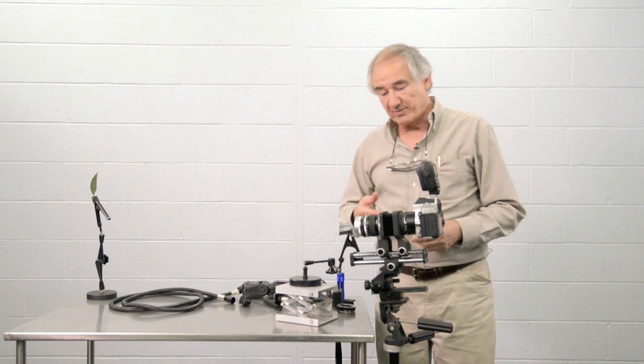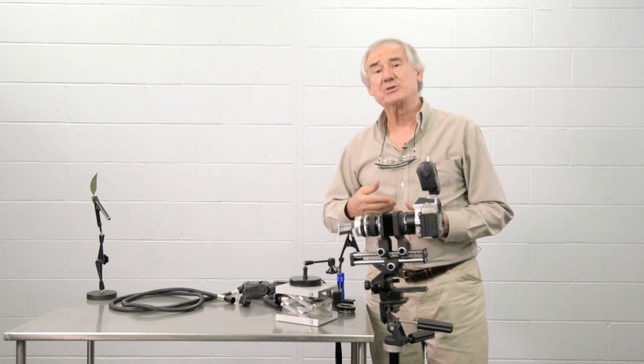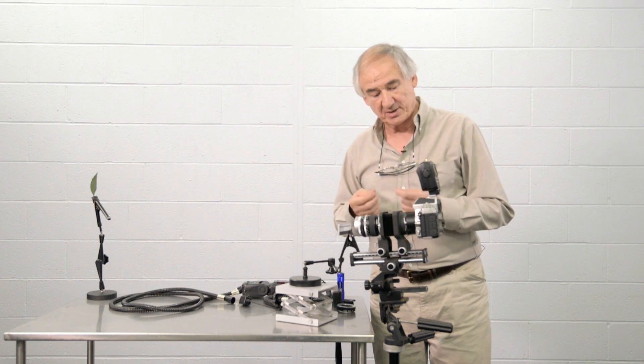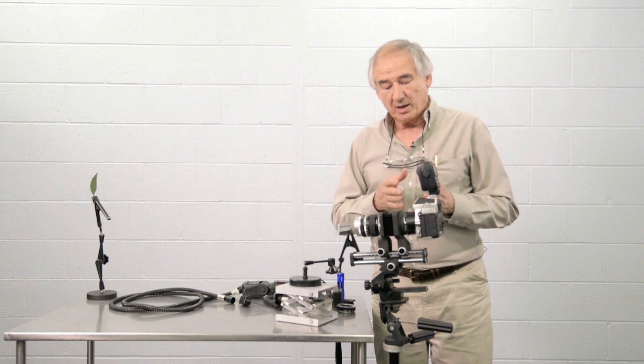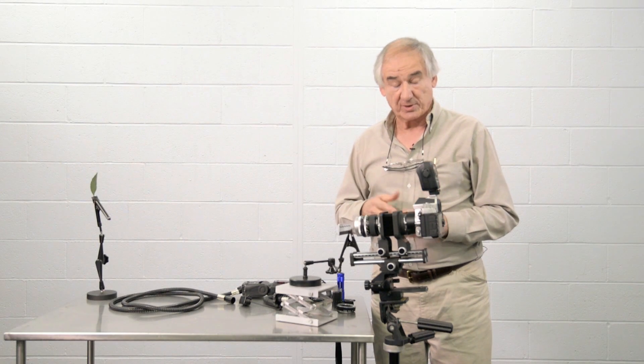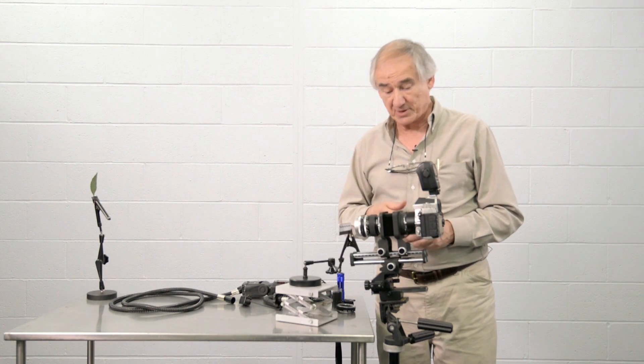Now the problem that we have in many cases is actually determining exposure. That's the biggest problem. As the higher the magnification we get, the more it affects the exposure. And we can do it mechanically and manually or we can let the electronics take over. And today's electronics on flash units are absolutely brilliant.